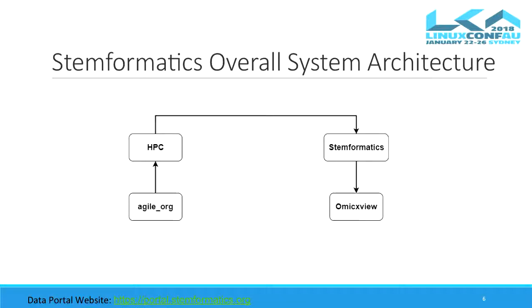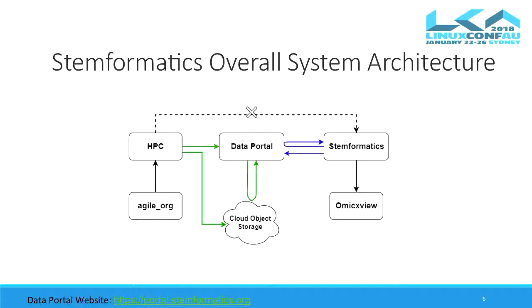When a new dataset is requested, it comes into Agile.org and is pushed to the high-performance computing system for processing. Then, after processing, it goes directly to the data portal via the Python client we developed, which pushes it to cloud storage. An API is used to retrieve those datasets from cloud storage. The green line shows the current implementation and the blue line shows the future implementation.